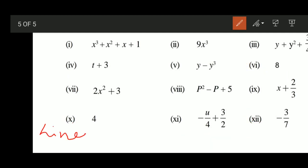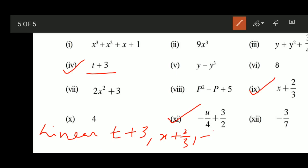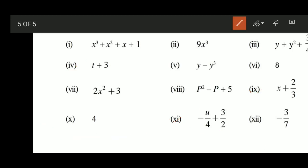For linear polynomials — simple one-variable expressions — the answers are: t plus 3, and x plus 2/3, and minus u divided by 4 plus 3/2. Those are your linear polynomial answers.